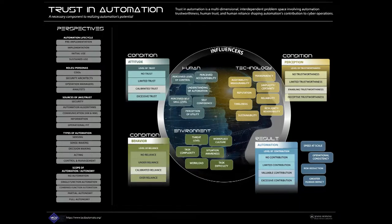We have a trust in automation framework. On the left side, we have some perspectives important to take into account. The first is the automation lifecycle — it depends on where you are in the lifecycle of your automation as to which aspects of trust you need to be thinking about. Different roles and personas in the cyber domain: CISOs, security architects, operation managers, and the analysts who are actually using the automation. There are also lots of sources of mistrust: the security of your automation, the algorithms, communications between human and machines, information, and operational fit.